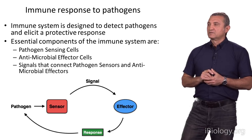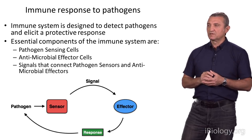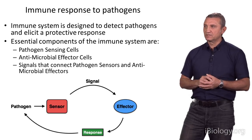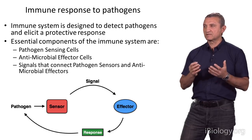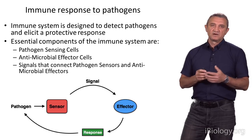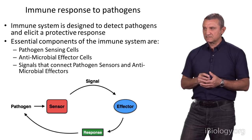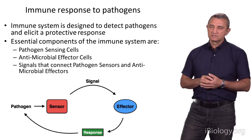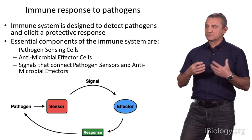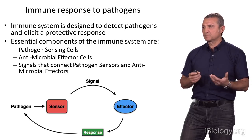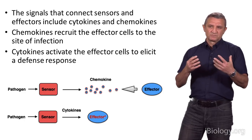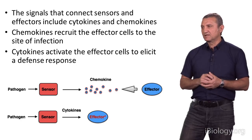Based on these ideas, we can summarize how the immune system operates using the logic of control circuits. One of the major functions of the immune system is to detect pathogens and provide a protective response — for example, destroying or expelling them. To do so, the immune system needs two essential components: a pathogen-sensing component and antimicrobial effector cells. Sensor and effector cells communicate with each other through a signal. Once the effector receives the signal from the sensor, it elicits a response that leads to defense from the pathogen. The signals involved in communication between sensors and effectors contribute to the enormous complexity of inflammation and immunity.